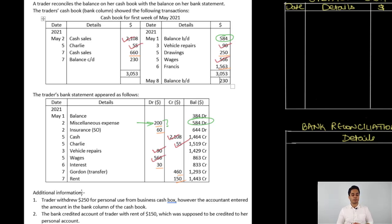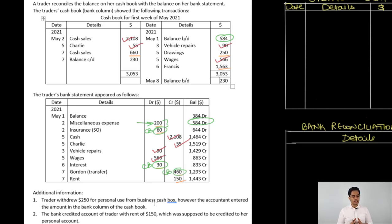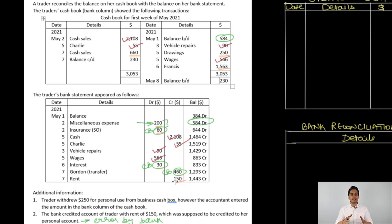We have an insurance standing order payment of $60 that will go in the updated cash book, and interest paid of $30 that will also be credited in the cash book. From the credit column of the bank statement, Gordon (bracket: transfer) is a credit transfer from a customer and will go in the updated cash book. There is also rent of $150 credited to the account, but adjustment number two says the bank credited this amount by mistake in the trader's business bank account instead of a personal bank account. Any bank error is never copied into our updated cash book — we will inform the bank to reverse it, and meanwhile it will go in the bank reconciliation statement.